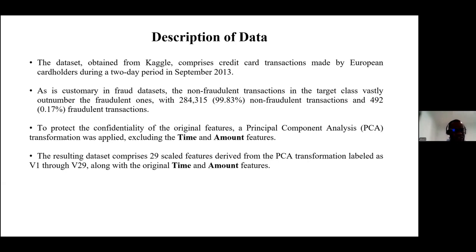A limitation associated with the data is that the original features had a principal component analysis transformation applied to them, excluding the time and amount features. After applying PCA, the final features used in the analysis were labeled V1 to V29, along with the original time and amount features.